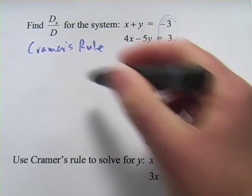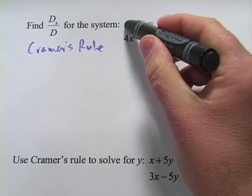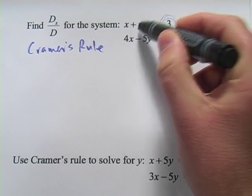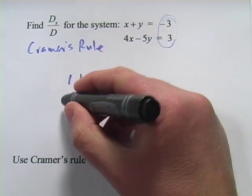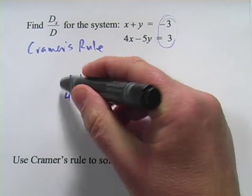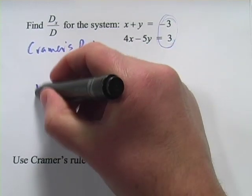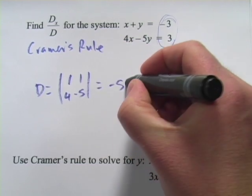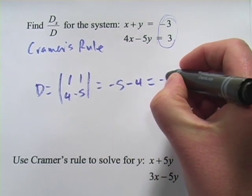Let me show you how this works. So let's find big D first. Let's make our coefficient matrix. The coefficients in this first equation are 1 and 1, so I've got 1 and 1, and then 4 and negative 5. So big D is this determinant. 1 times negative 5 minus 1 times 4 equals negative 9.